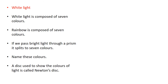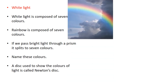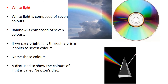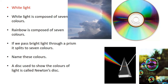Next, we will be discussing about white light. White light is composed of seven colors — VIBGYOR: violet, indigo, blue, green, yellow, orange, red. The rainbow you see in the sky is composed of these seven colors. Similarly, if we pass bright light through a prism, it will split into seven colors. Even if you take a CD, you can see all the seven colors.